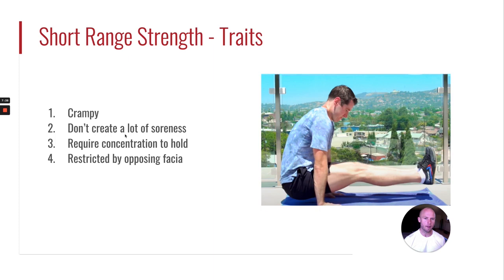The restriction is the opposing connective tissue — the opposing fascia and muscle lengths on the opposing side of the body. That's really what we need to be thinking about with the extreme inner range: when we take it to the extreme, if you're trying to get into a V-sit or even an L-sit for a lot of people, it's that tightness in the posterior chain that really makes us work hard.